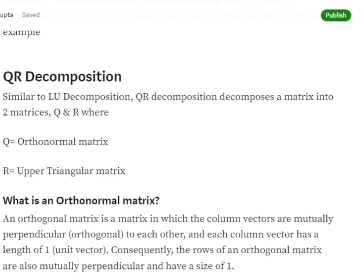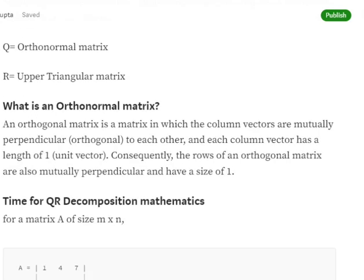One is the orthonormal matrix, another is the upper triangular matrix. First, we'll try to understand what is an orthonormal matrix. An orthonormal matrix has two particular features: all the column vectors present in the matrix are perpendicular to each other, and each column vector has a length of one. If the column vectors are mutually perpendicular to each other but are not of unit length, then it is called an orthogonal matrix.